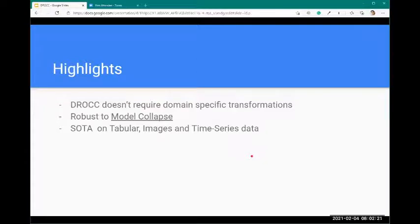DROCC doesn't require any domain-specific transformations. Unlike random forest, isolation forest or one-class SVM where we do a lot of feature engineering, no such domain transformations are required. It is robust to model collapse and state-of-the-art on tabular, images and time-series data. It's really impressive that one single technique can be used on different kinds of datasets.